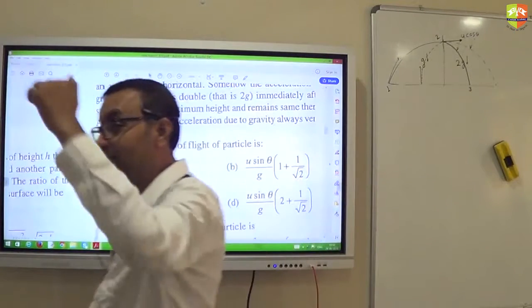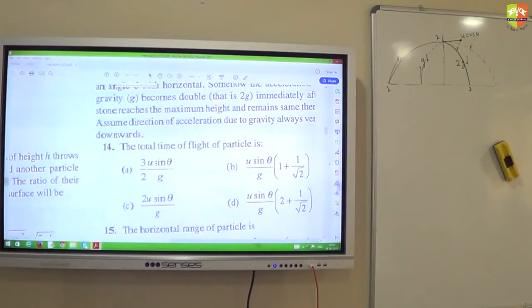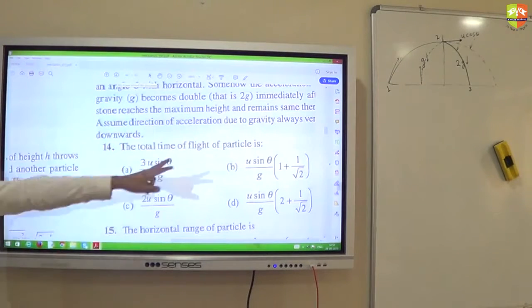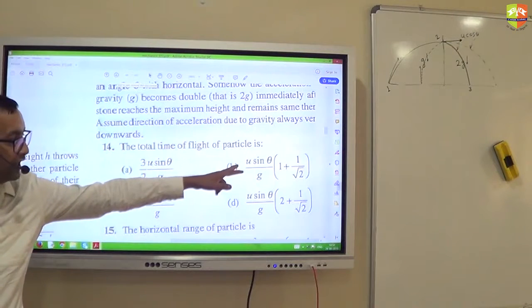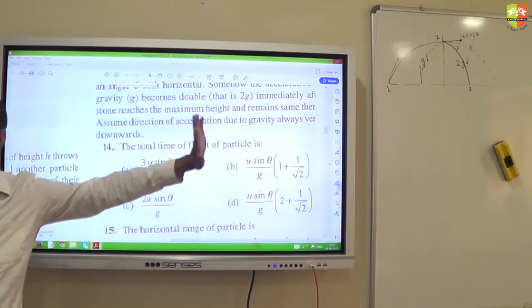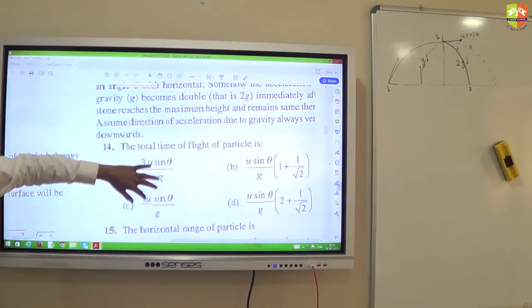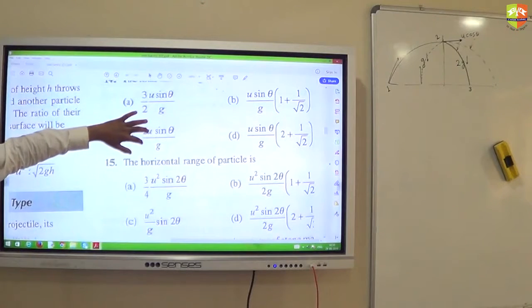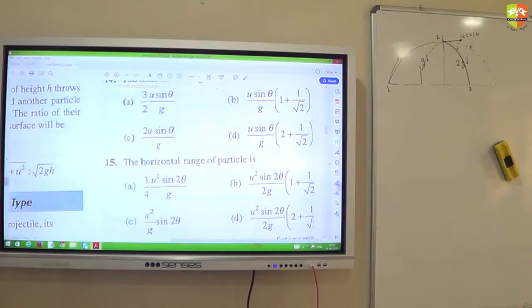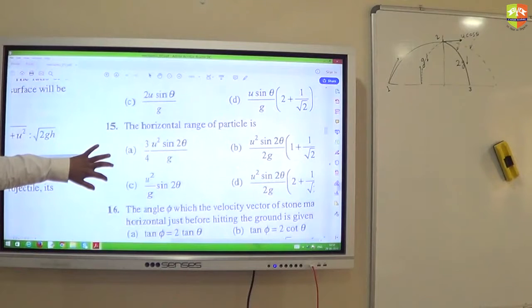Acceleration is changing but that is changing along Y axis. X axis velocity will remain unchanged. Have you understood this? Yes sir. U cos theta into time of flight which is B option, right? Right? So U cos theta into U sin theta by G into 1 plus 1 by root 2. Okay? So which option? Option B.